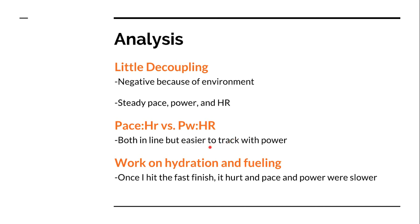Both pace-to-heart-rate and power-to-heart-rate were in line, but I found it easier to track with power during the actual test because of the undulations in the course. My pace would go from 7:45 on uphills to 6:45 on downhills, which influenced my heart rate. But by focusing on maintaining that 275 watts — 80 to 85 percent of my FTP — it was a lot easier to manage through the undulations.